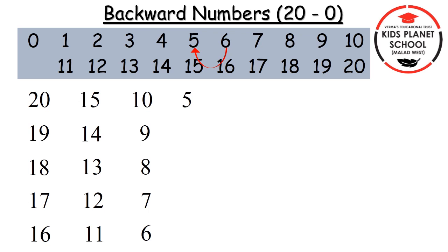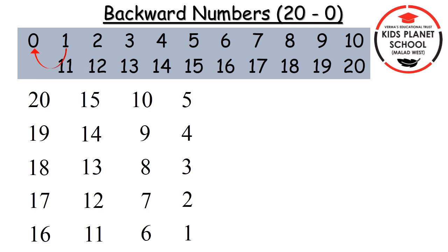Next, which number comes before 5? Yes, 4. So we will write 4. Which number comes before 4? Yes, 3. So we will write 3. Which number comes before 3? Yes, 2. So we will write 2. Which number comes before 1, children? Yes, 0. So we will write 0.